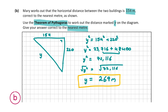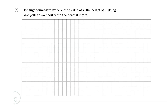So 269 meters is our final answer for Y, and for this question you're also going to get 10 marks. Now for the final part, question C asks us to use trigonometry to work out the value of Z — the height of building B — and give the answer correct to the nearest meter.